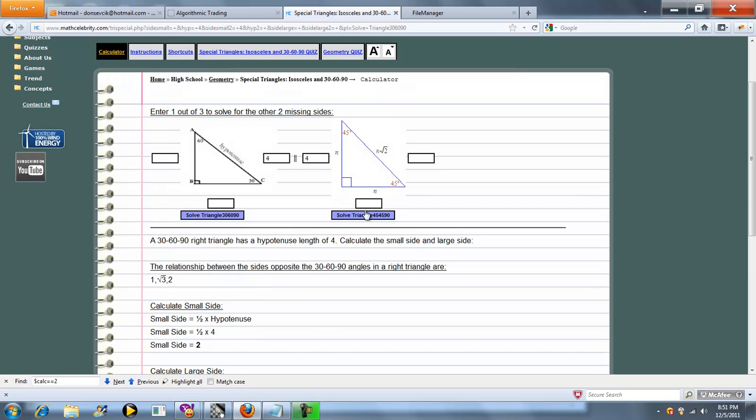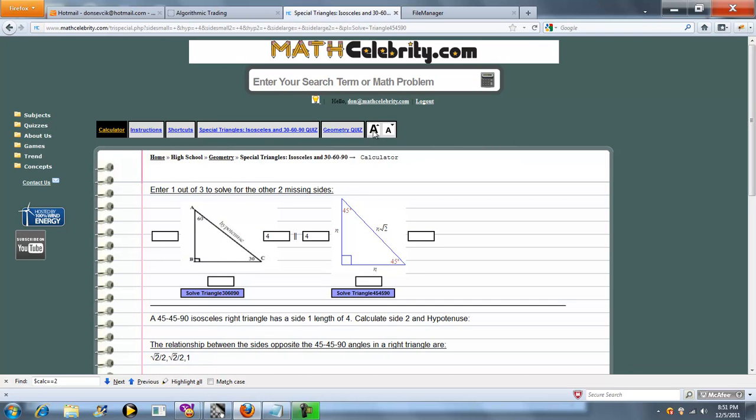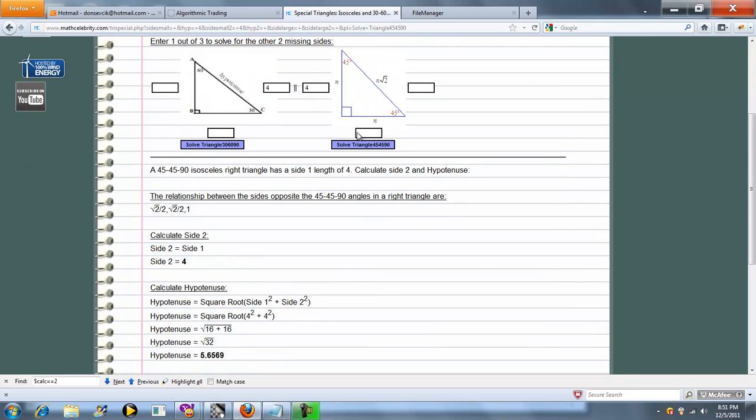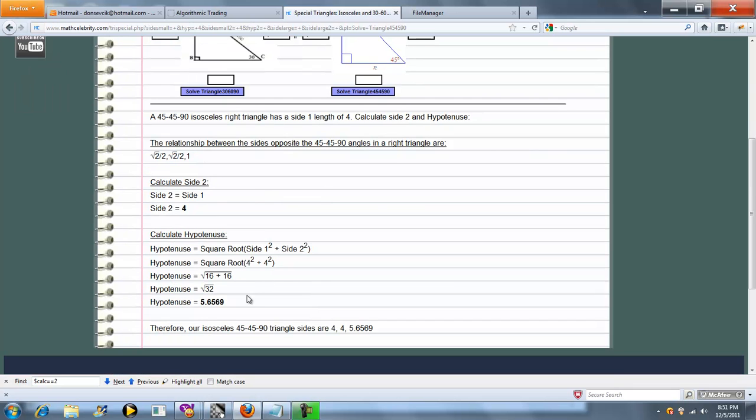And we'll try one problem here with the 45-45-90. So we entered either one of the equal sides, it doesn't matter which. Calculates the other side using the ratios, and then the hypotenuse. And then summarizes your sides.